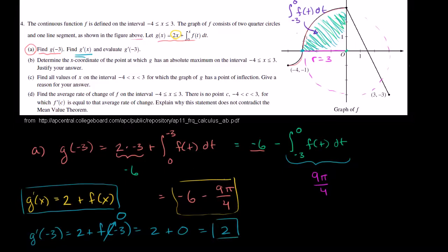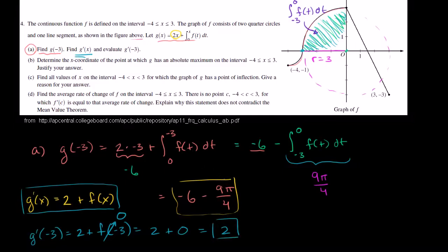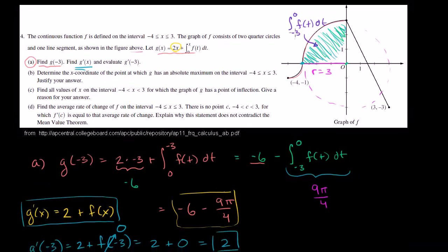The trickiest part of this is realizing the bounds of integration. You might be tempted to say the integral between 0 and negative 3 is just this area, because we're going between 0 and negative 3. But you've got to realize we actually have to swap them and make it negative if you want to consider this area. This integral is going to be the negative of this area — and that's what we did when we swapped the bounds.